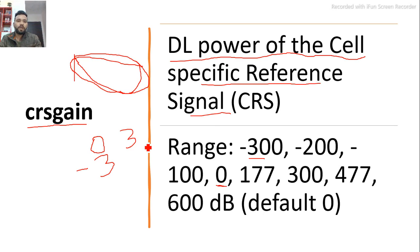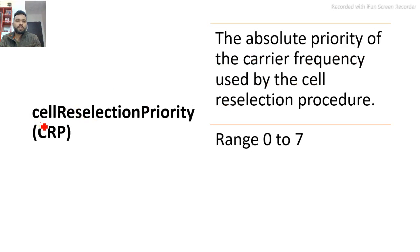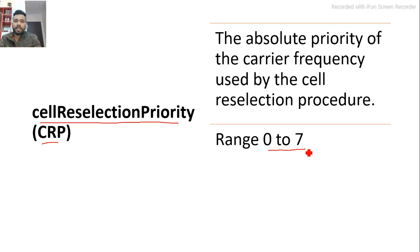The third parameter is Cell Reselection Priority, also called CRP. It ranges from 0 to 7. In an LTE network with multiple frequency bands, each band has its own priority. Capacity layer bands are given higher priority (e.g., 7) and coverage layer bands are given lower priority (e.g., 0 or 1).